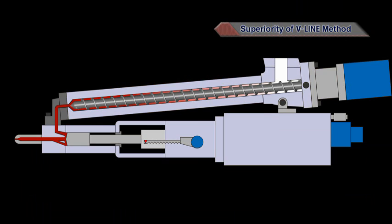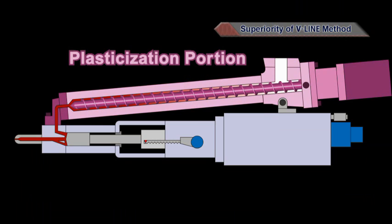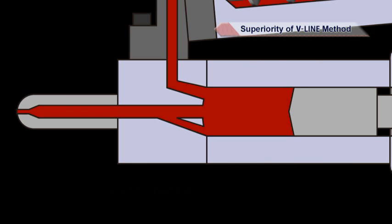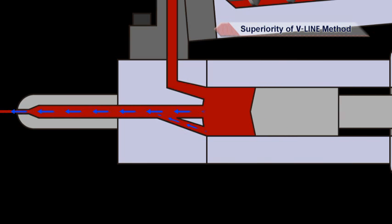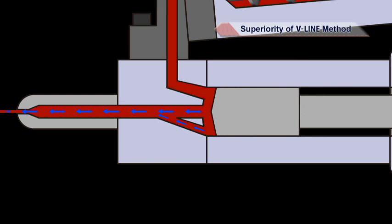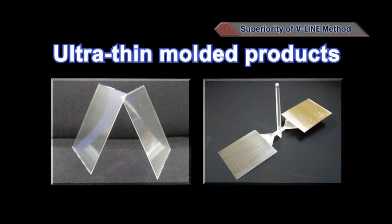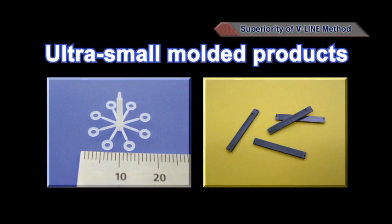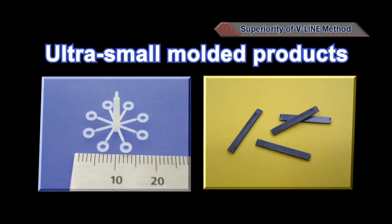Sodec is proud of this V-Line Method since the plasticization and injection portions are separated. Stable plasticization, accurate measurements, and injection can be performed at all times. Compared with the In-Line Screw, since the plunger which performs the injection is extremely short and lightweight, it demonstrates its best ability in high-speed injection molding of ultra-thin products and molding of ultra-small products.